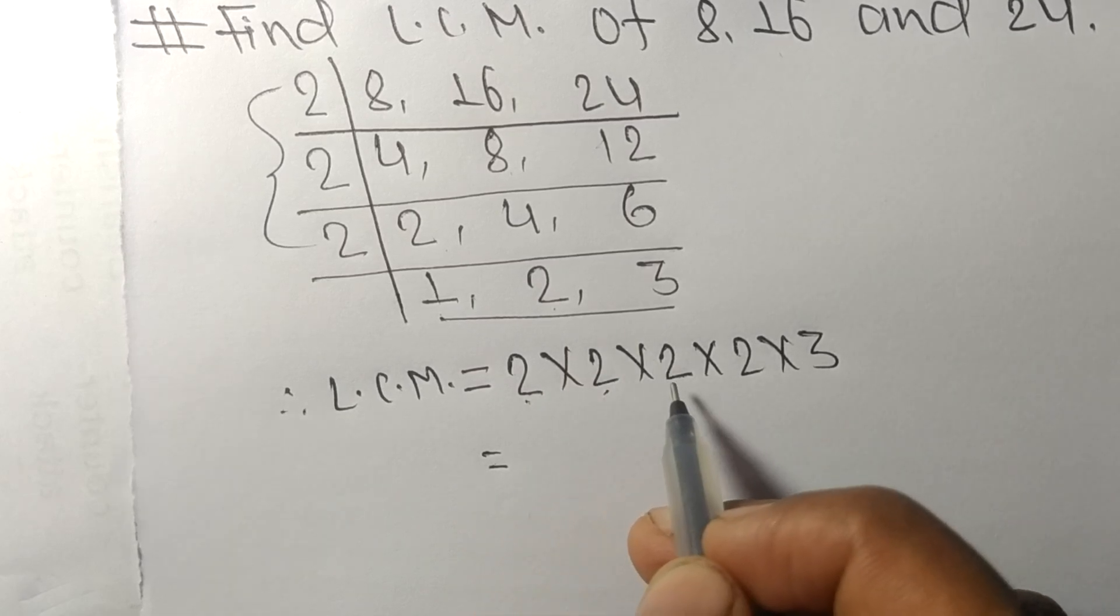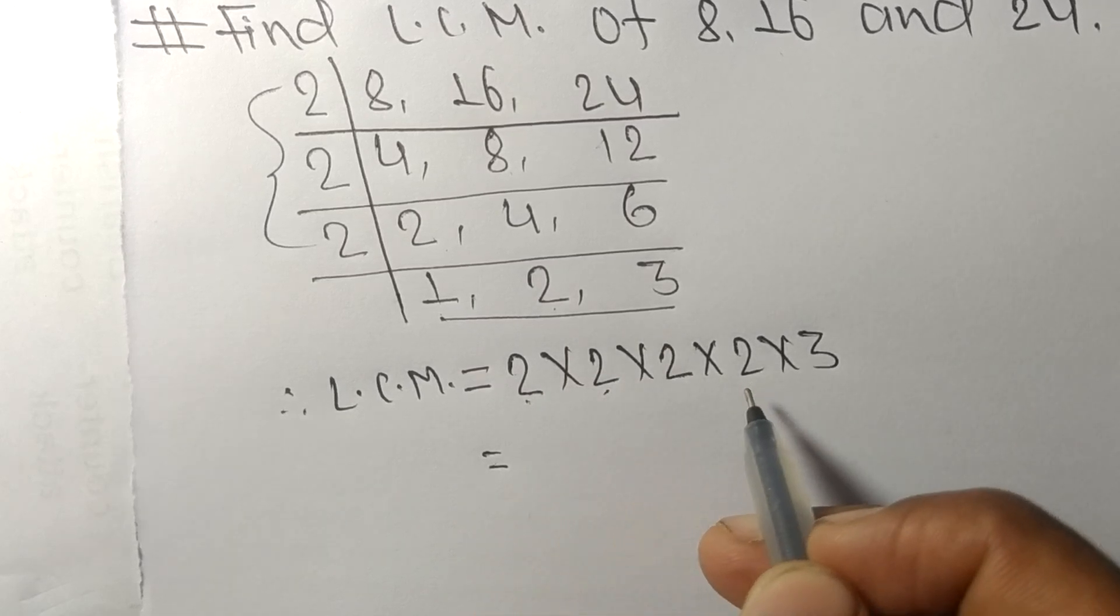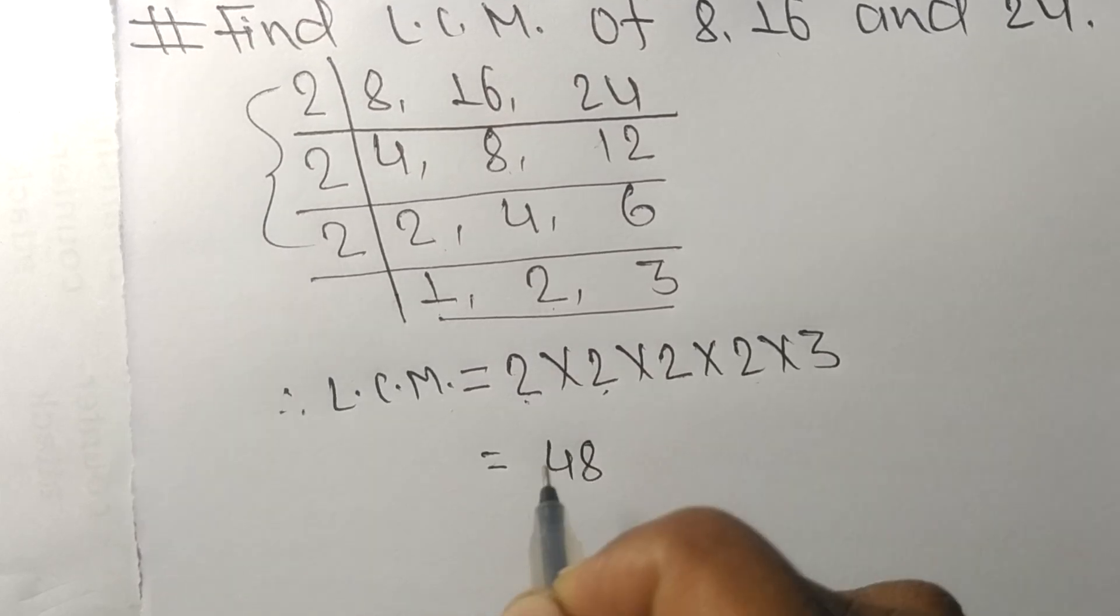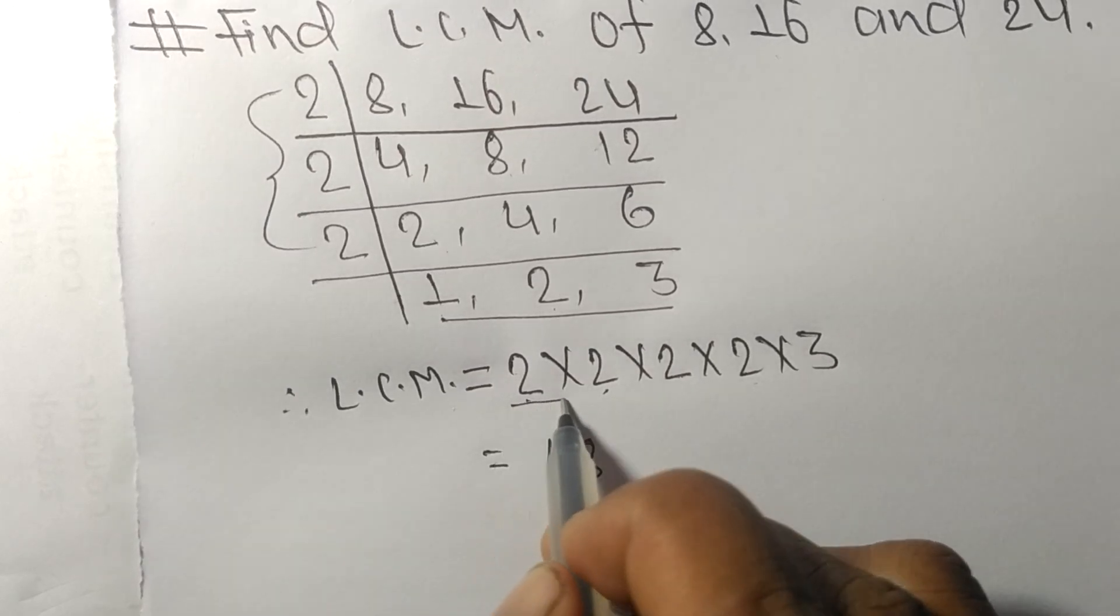So 2 times 2 means 4, 4 times 2 means 8, 8 times 2 means 16, 16 times 3 means 48.